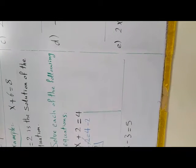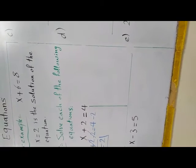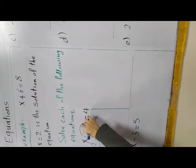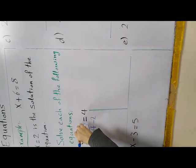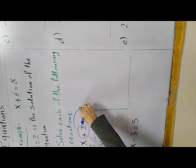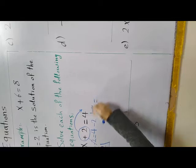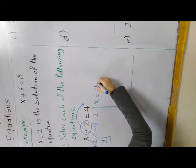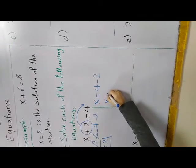The other method: to remove number 2 from the side of x, I move it to the other side with the inverse sign. Here I have plus 2, so I move it to the other side as minus 2. So x equals 4 minus 2, which equals 2 — the same answer.